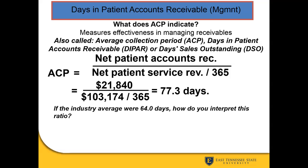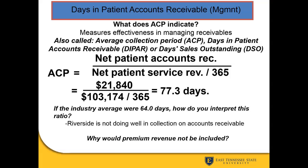Comparing to the industry average of 64 days, we're about 10 to 13 days behind in collecting on open accounts. This signals to financial managers and leaders that we need to examine our collection process and consider process redesign to bring that number down to at least the industry benchmark. Premium revenue — capitated payments — is excluded because those payments are collected before services are provided, creating a liability rather than an amount owed to us.